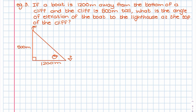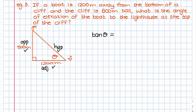In the last example we're asked to find the angle of elevation. A boat is 1200 meters away from the bottom of a cliff, and the cliff is 500 meters tall. We need to find the angle of elevation from the boat to the lighthouse. We label the triangle with opposite, adjacent, and hypotenuse. We use the 500 meters (opposite) and 1200 meters (adjacent), and since we don't have a value for the hypotenuse, we use tan: tan(θ) = 500/1200.